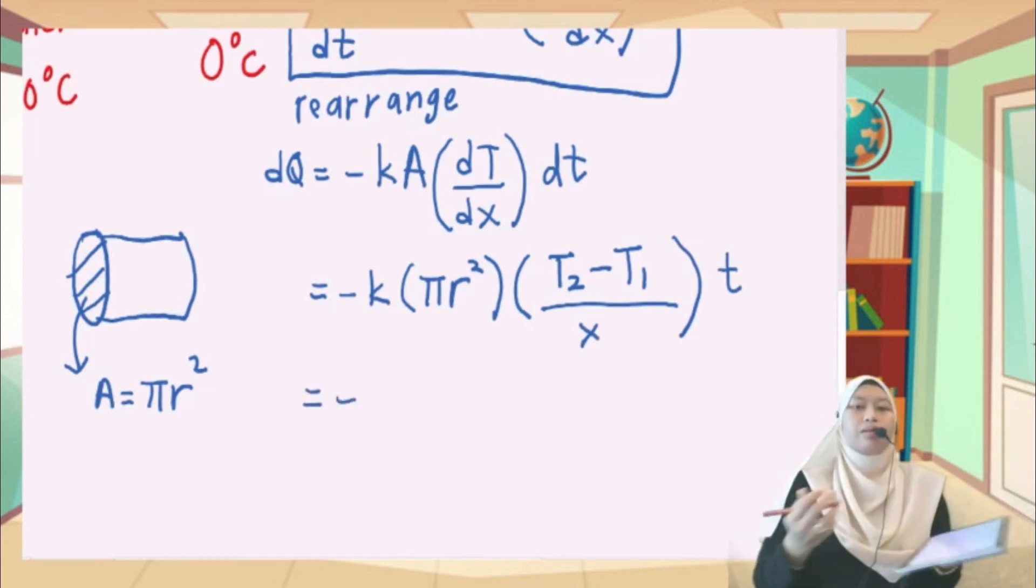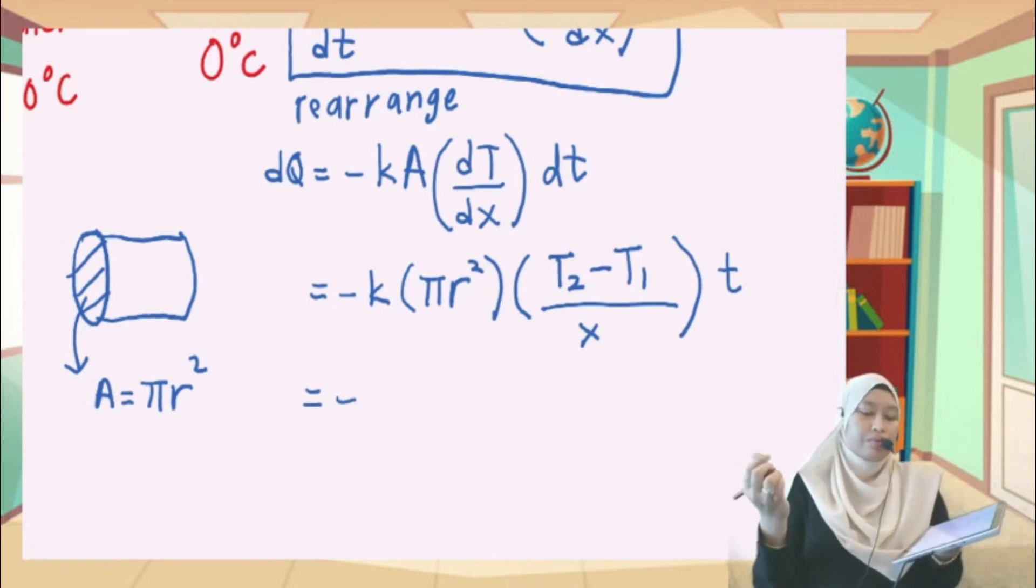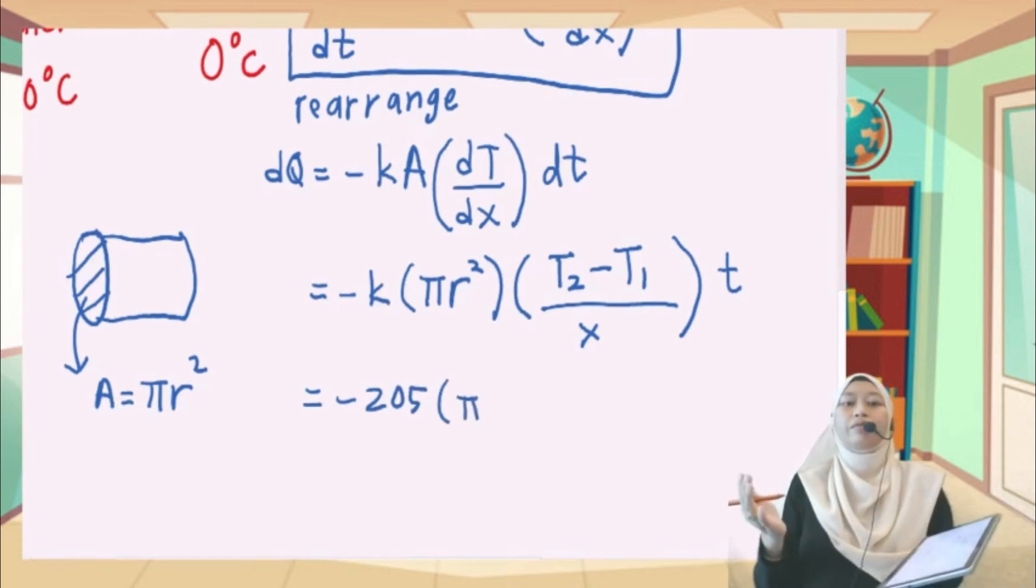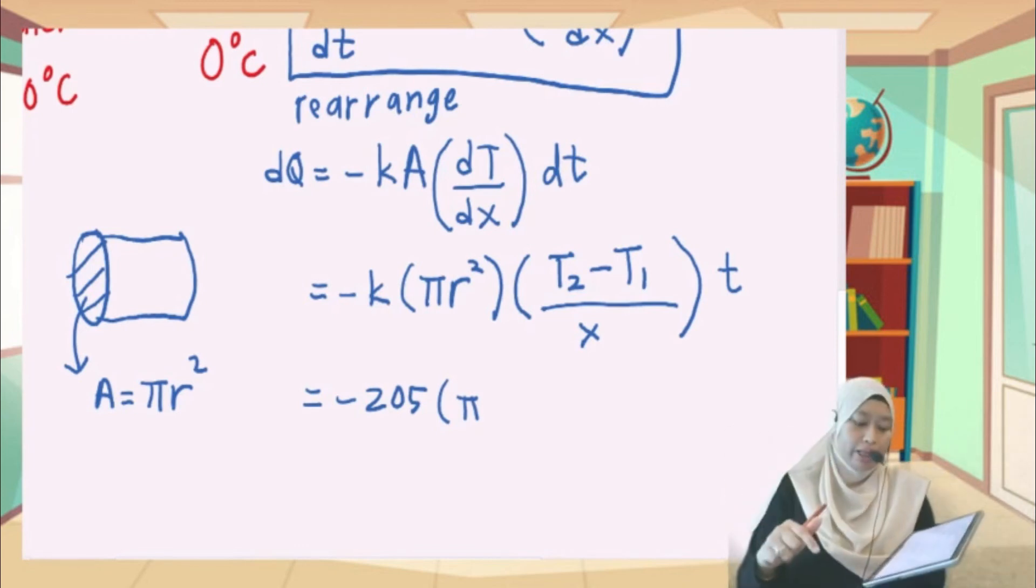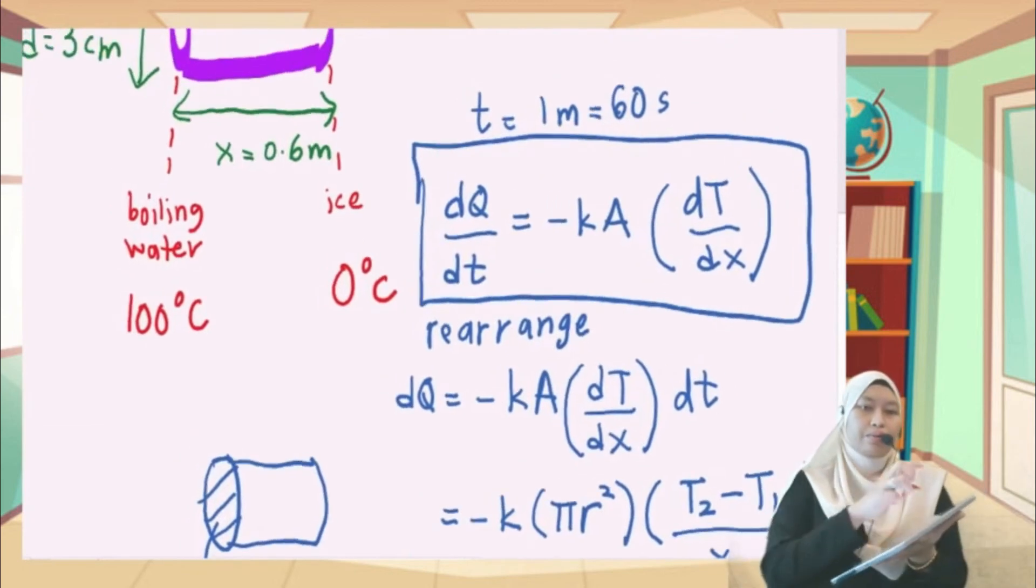Now we already know the full formula, so just substitute the value. K is 205. And we don't have r but we have diameter. Radius is basically diameter divided by 2. The diameter is 3 cm.